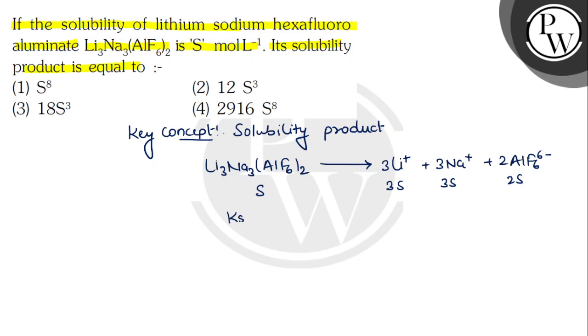So KSP, which is solubility product, equals concentration of lithium ion, concentration of sodium ion, and concentration of AlF6 to the 6 minus ion.